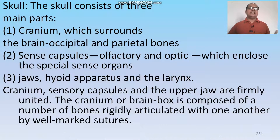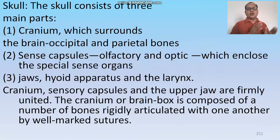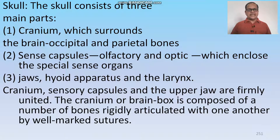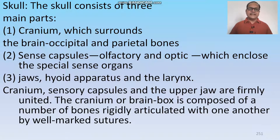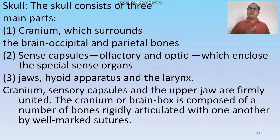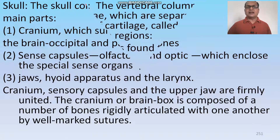The skull consists of three main parts: the cranium which surrounds the brain with occipital and parietal bones, the sense capsules including olfactory and optic capsules which house the special sense organs, and the jaws, hyoid apparatus and larynx. These three parts combine to form the skull. The cranium and upper jaw are firmly united, and the cranium or brain box is composed of a number of bones rigidly articulated with each other by well-marked sutures.